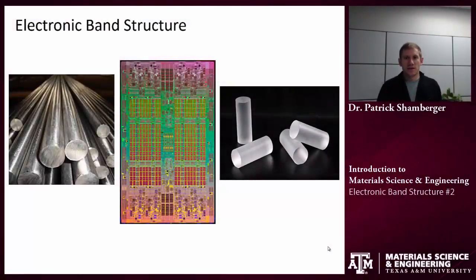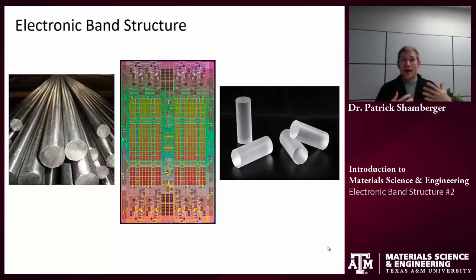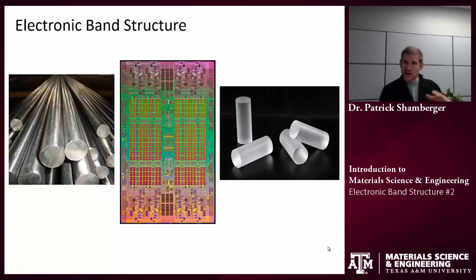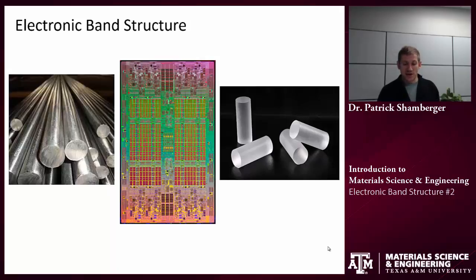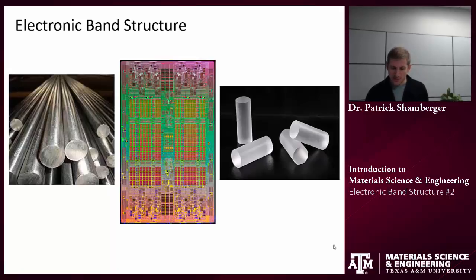We're going to continue talking about electronic energy bands in this video, and we're going to talk about how we fill up these energy bands with the available valence electrons — the outermost energy electrons in the atom — and how this filling of electronic bands results in the electronic properties that we're familiar with: metallic, insulating, and semiconducting properties.